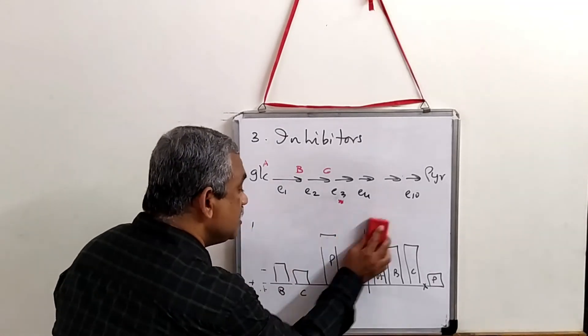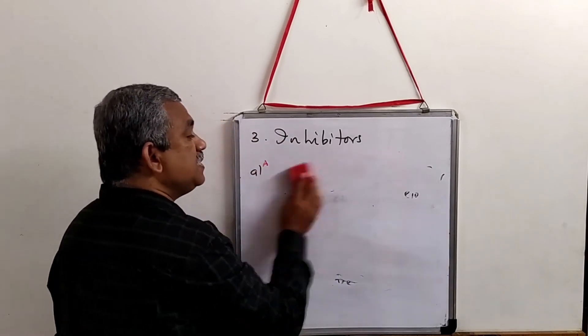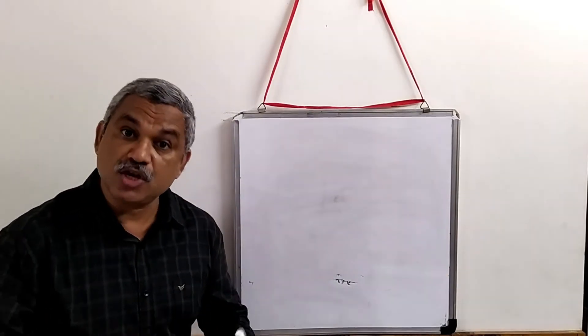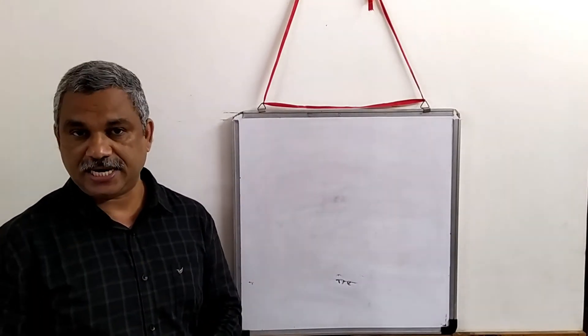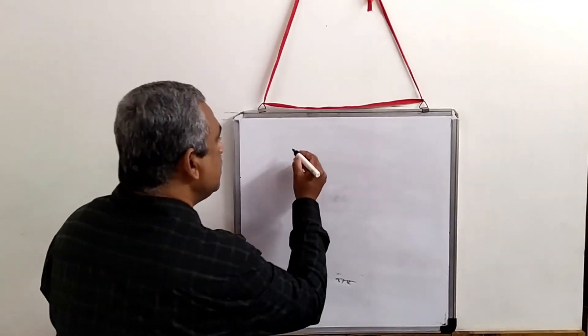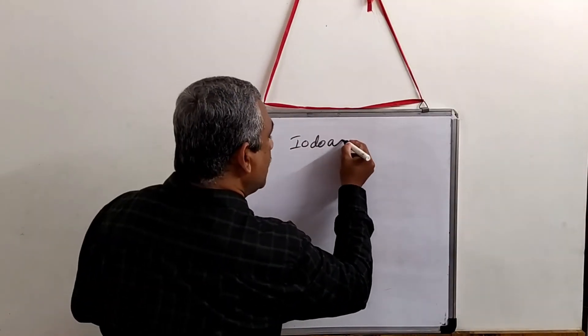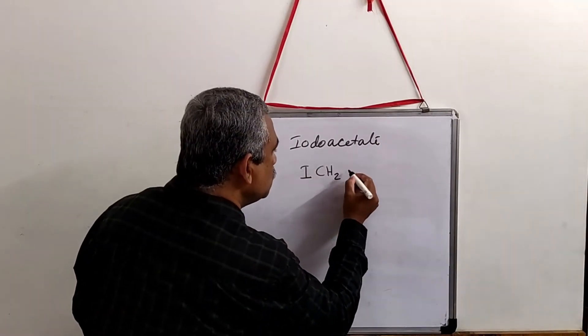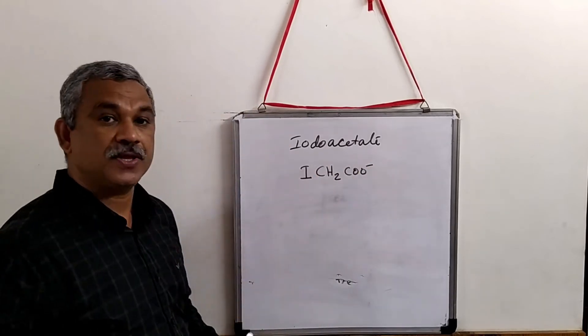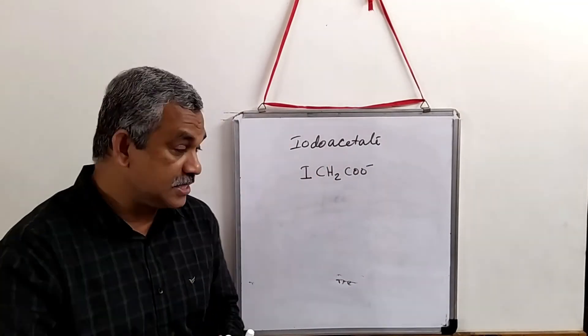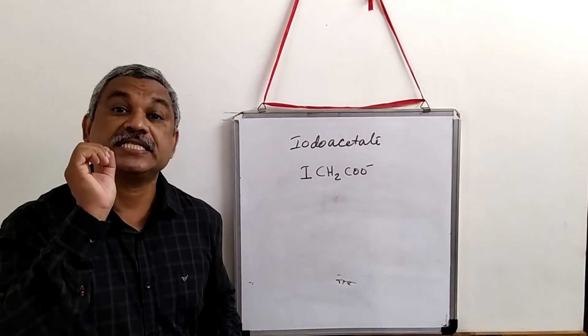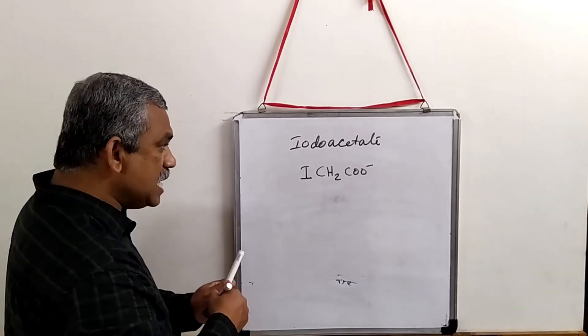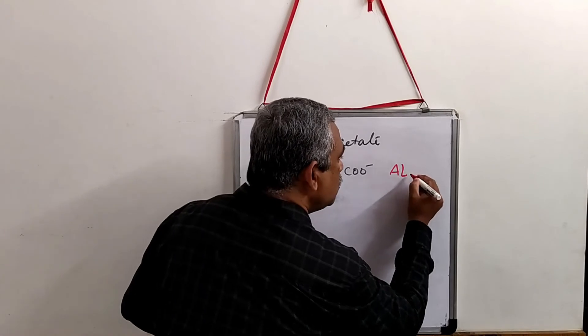The first pathway studied using inhibitors was glycolysis - the conversion of glucose into ethanol. They used substances like iodoacetate. Iodoacetate structure is I-CH2-COO-. Iodoacetate will bind to the sulfhydryl group of enzymes. This will specifically inhibit an enzyme known as aldolase. It can also inhibit glyceraldehyde 3-phosphate dehydrogenase enzyme.